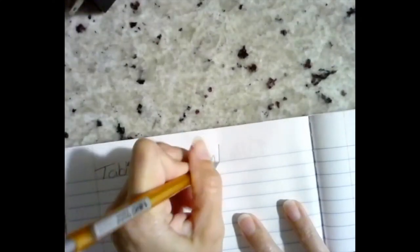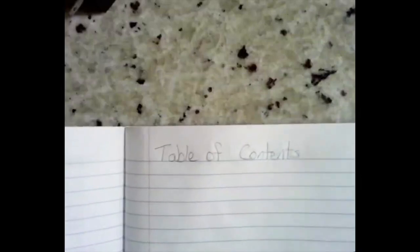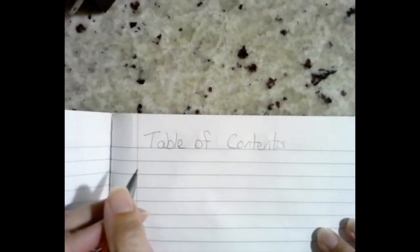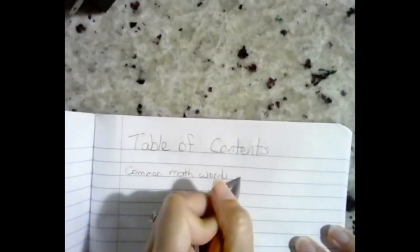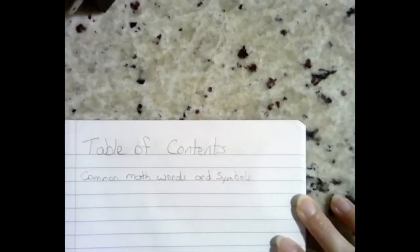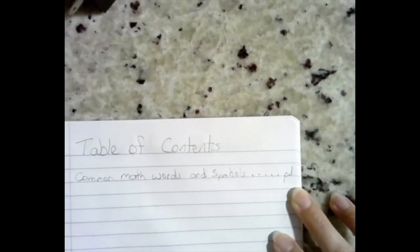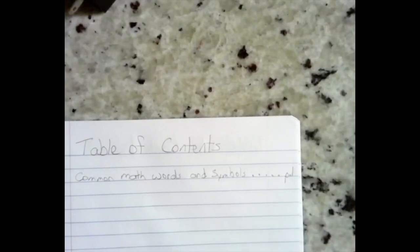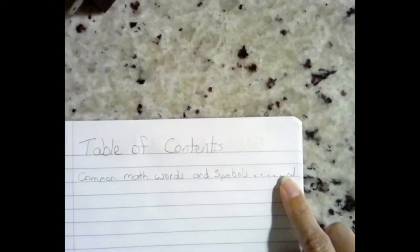Now we should have enough table of contents pages to last us the whole year. So now we are going to go back to that first table of contents page, the very first one that we did, and we're going to put our first entry. The very first entry is going to be common math words and symbols, and then a real table of contents usually has a bunch of dots, and that's gonna be on page one. Our table of contents pages don't count in the numbers when you're numbering a page, so we're not numbering those at all.